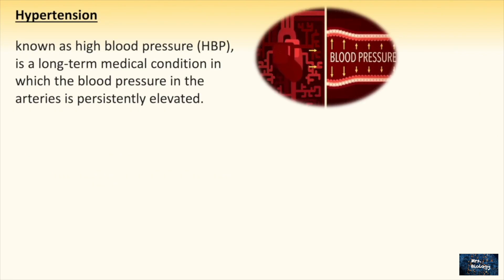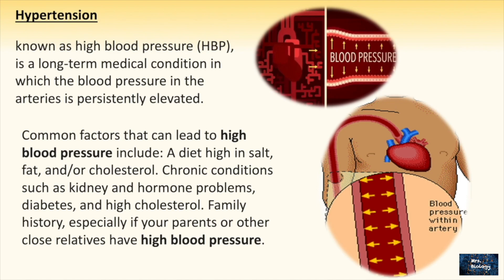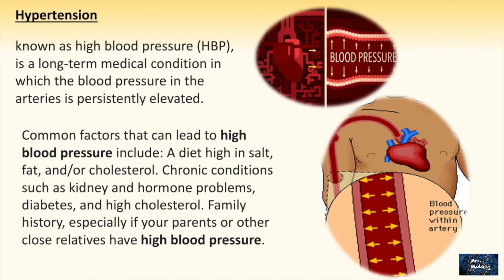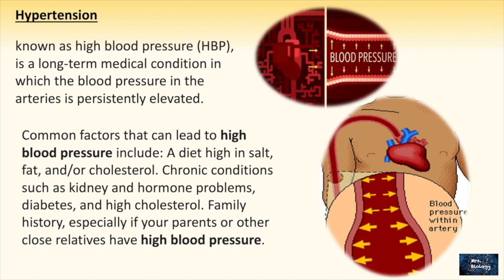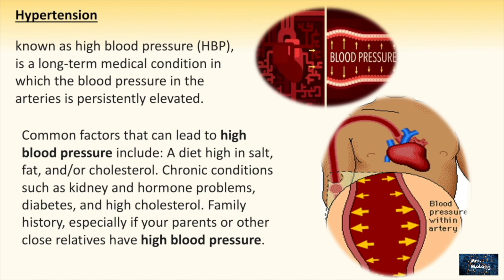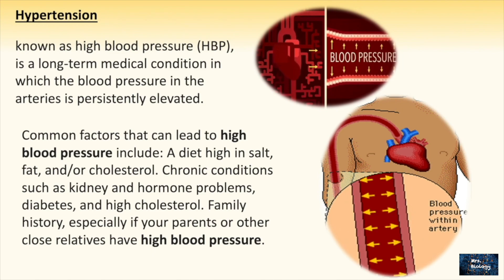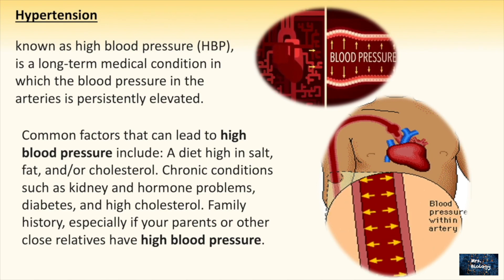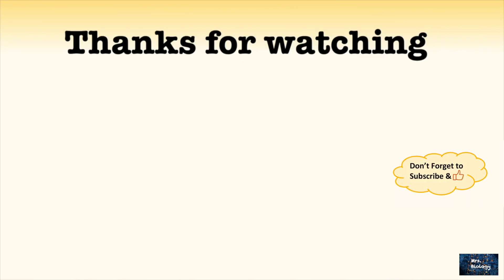The last topic is hypertension, known as high blood pressure. It is a long-term medical condition in which the blood pressure in the arteries is persistently elevated. Common factors that can lead to high blood pressure include a diet high in salt, fat, or cholesterol; chronic conditions such as kidney and hormone problems, diabetes, and high cholesterol; and family history, especially if parents or close relatives have hypertension. That's it — thanks for watching.